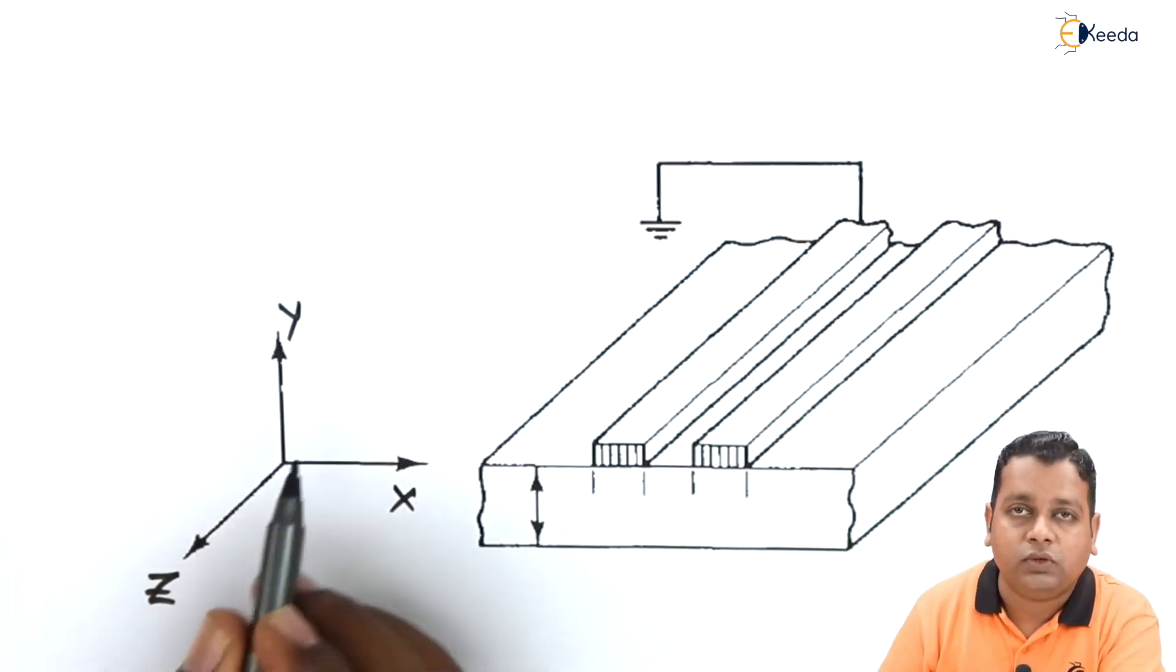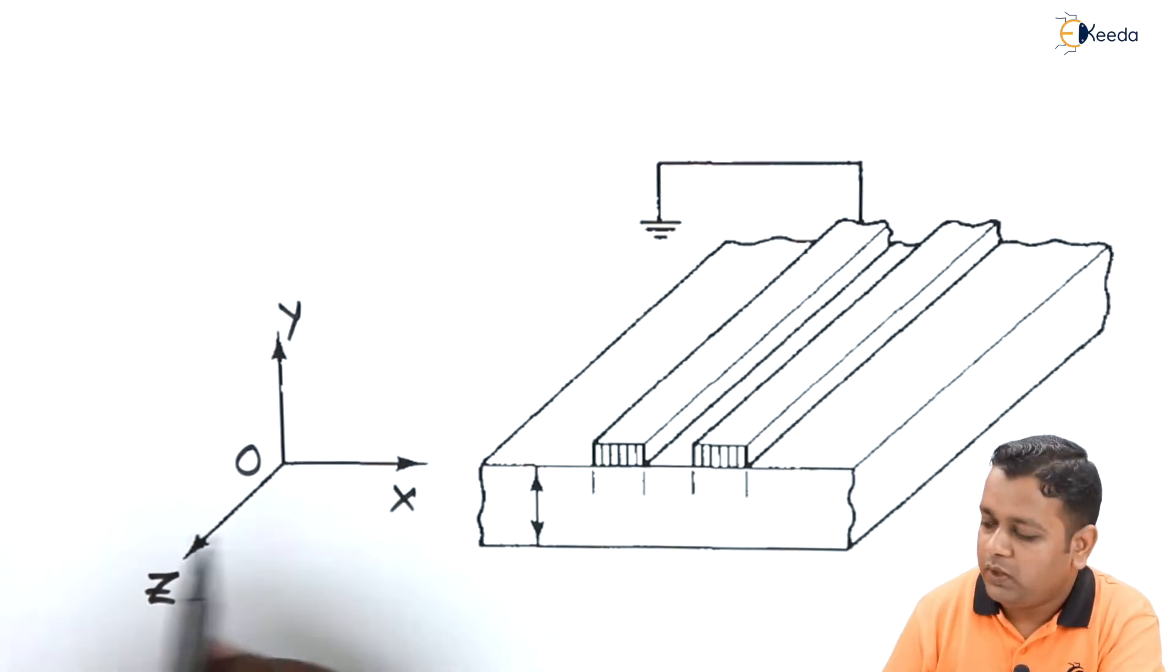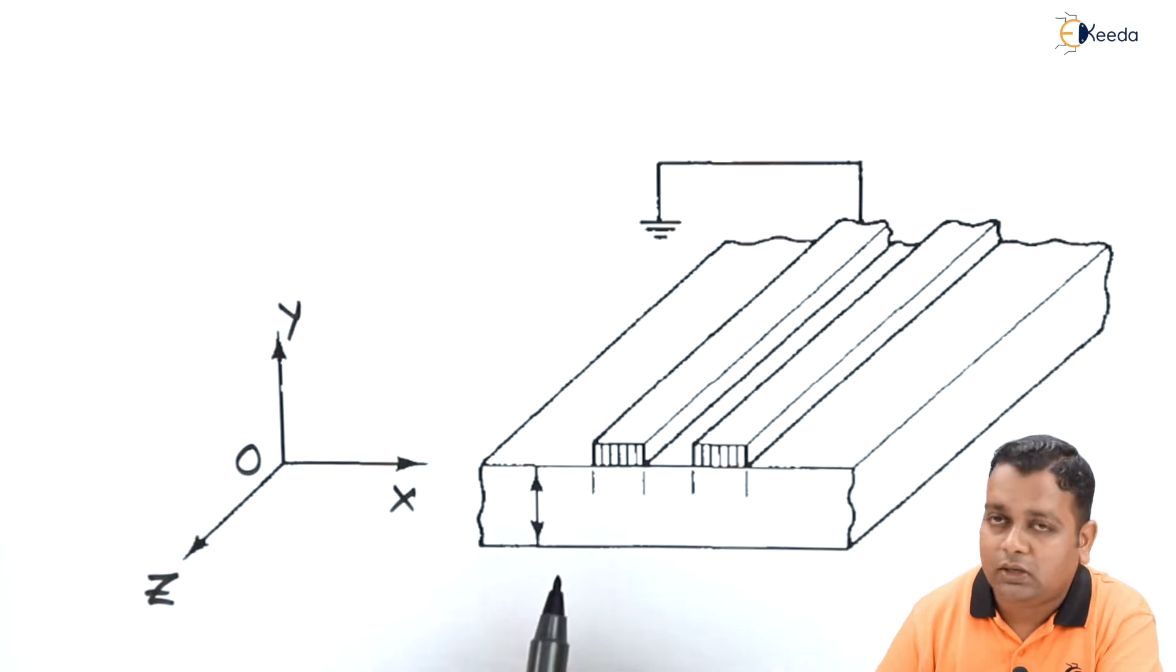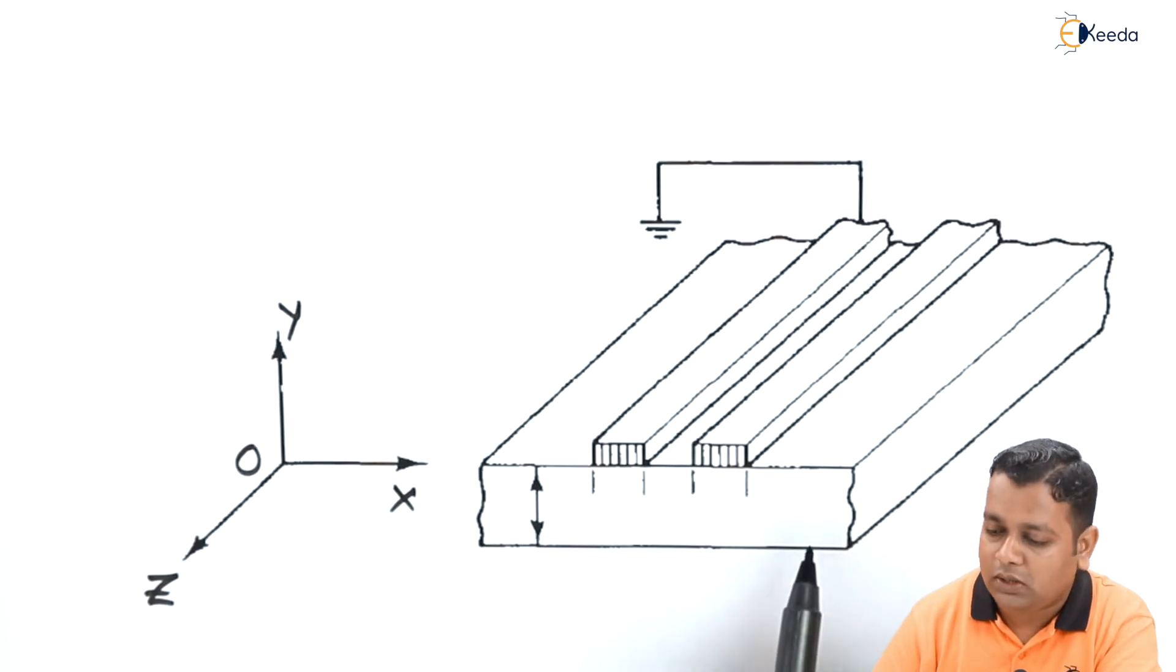This is the three-dimensional cross-sectional view, whereas the signal is propagating towards the positive z direction. As you can see the structure here, this is the dielectric substrate that we have represented.